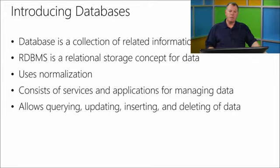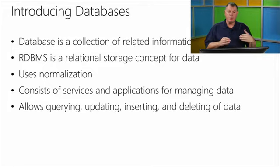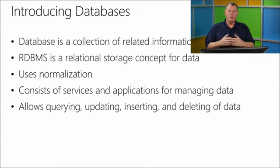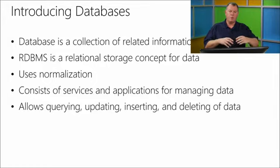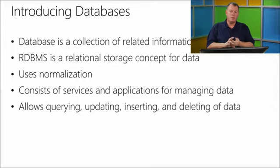The RDBMS, or relational database management system, takes it a step further and brings out this relational concept of the data itself. It allows us to store information in ways that deal with normalization — a database term for how we store data in separate tables and how we can link those tables together to gain access to the information we want. As an example, your address contains your street number, street name, state, city, and zip code.